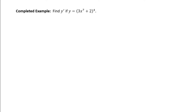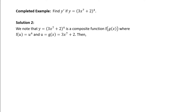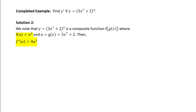Now let's apply the chain rule to solve this example again — this is our second solution, and I think the better one. We know that y equals 3x to the 7th plus 2 raised to the 4 is a composite function: f of g of x, where f of u is u to the fourth, and u is the inside function g of x which equals 3x to the 7th plus 2. Then the derivative f prime of u, using the power rule, is 4 times u cubed.